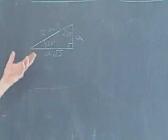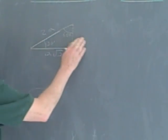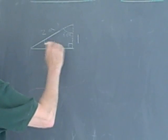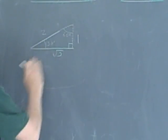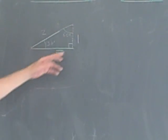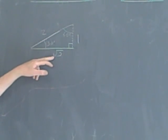It doesn't really matter what number we use for a. In fact, a very convenient number is to use 1, and then we have 2 here, and then we have the square root of 3 there. So if this short side is 1, then this long side has to be 2, and this has to be the square root of 3.